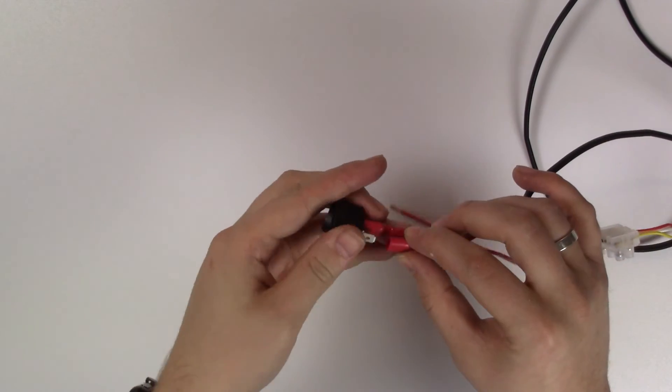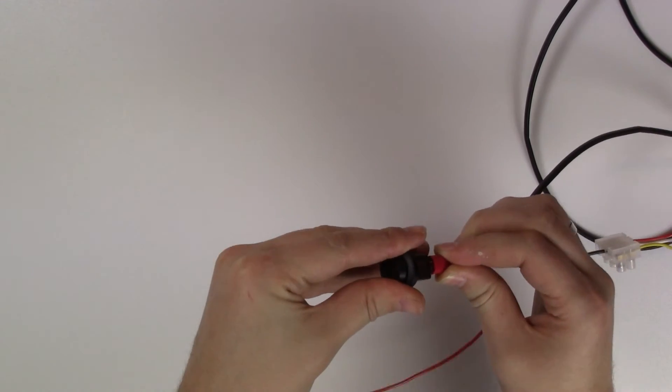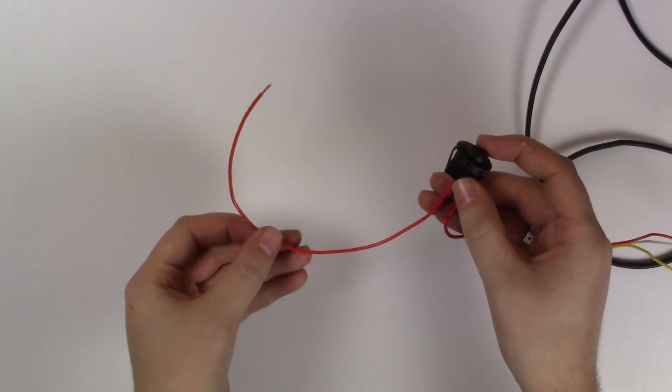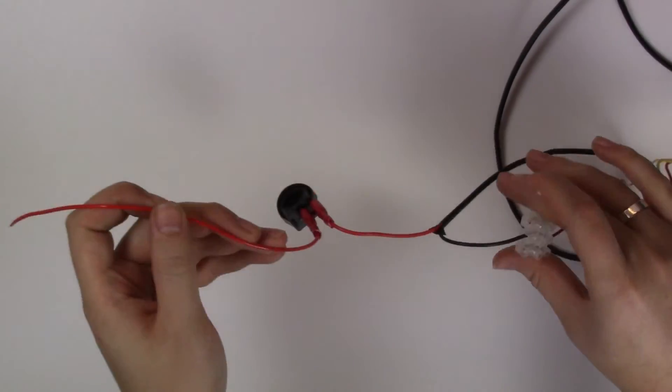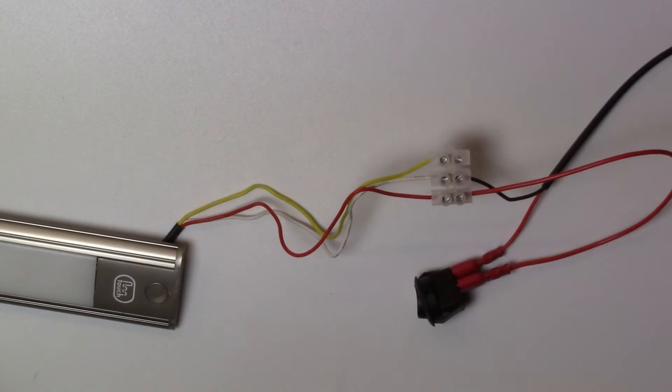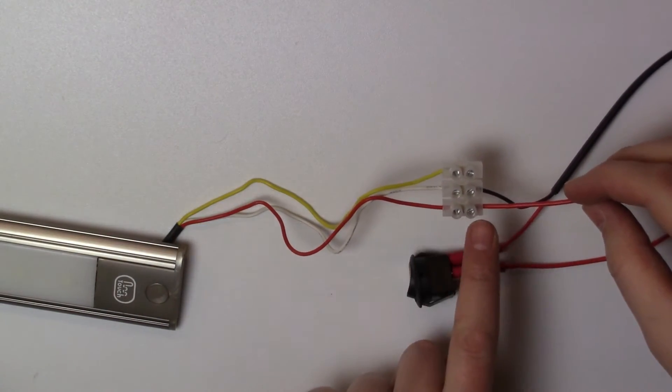By introducing a switch into the circuit we can use this as an exterior switch. Alternatively, if you wish to just have a constant power you do not have to have the switch here. By connecting it into the red cable as you can see here.